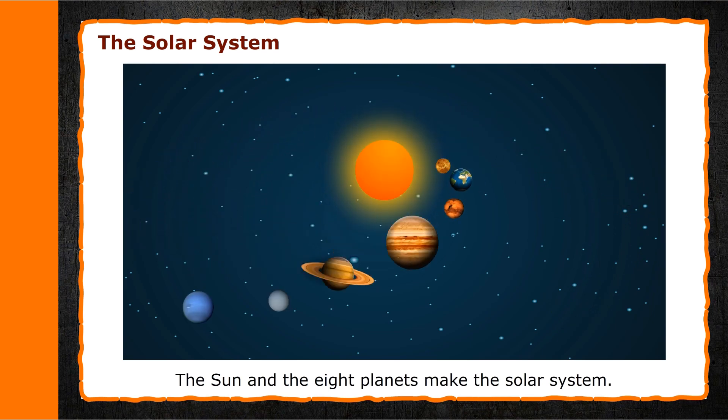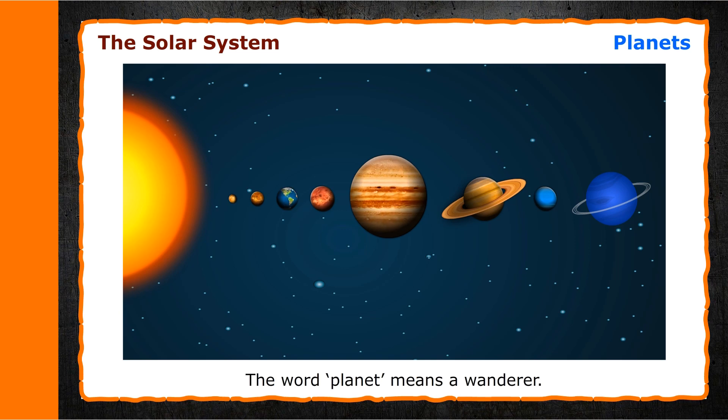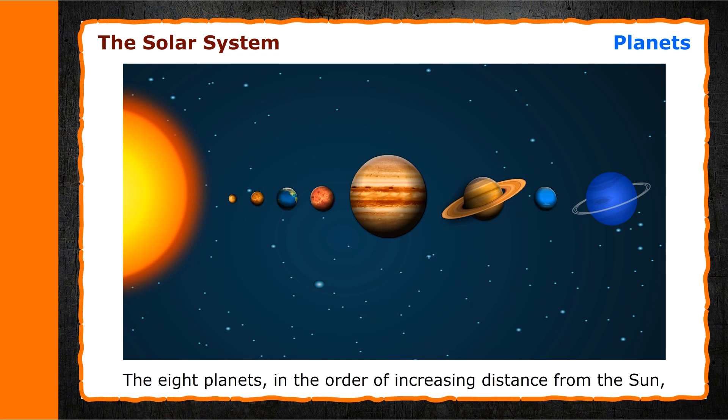Planets. The word planet means a wanderer. The eight planets in order of increasing distance from the Sun are Mercury, Venus, Earth, Mars, Jupiter, Saturn, Uranus, and Neptune.